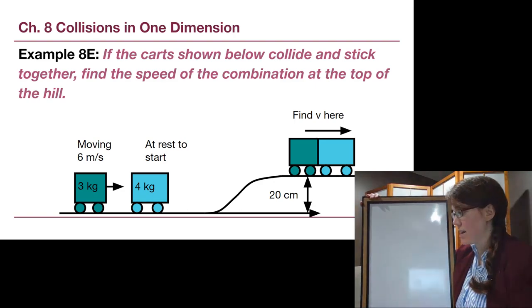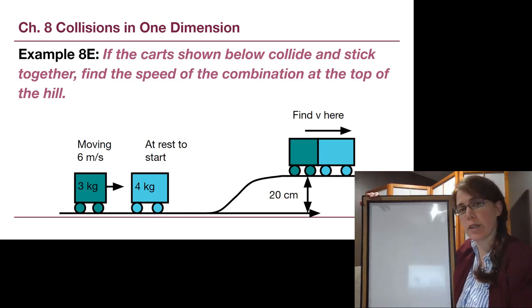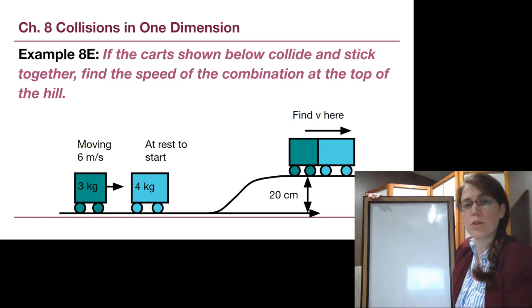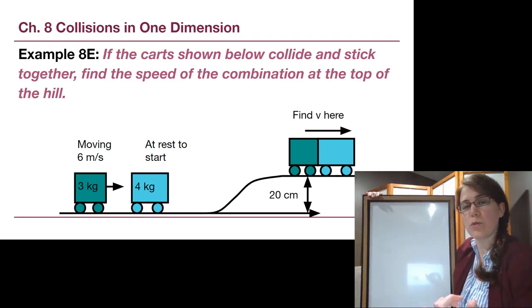All right, in this example from chapter 8, it is the fifth example from the chapter, and it's the second example of the two-step problem type that we're working on right now. In this example, there are two carts, one of which is moving at the start of the problem, that hit each other and then roll up a hill.